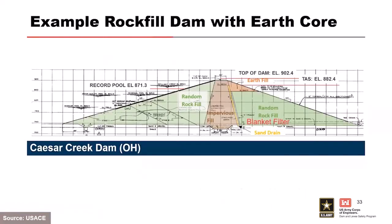Here's another example — Caesar Creek Dam, a central core dam. You can see the chimney drain, a blanket drain on the foundation, and a cutoff. One notable aspect: the upstream area had two zones — stage one and stage two of construction — that served as a cofferdam. They built these early on and then could build the rest of the embankment with cofferdam protection and some kind of diversion.